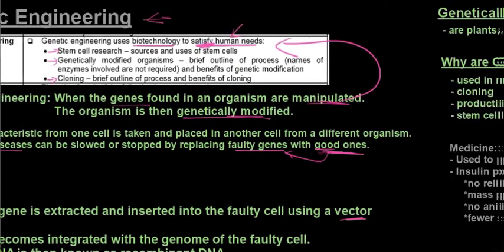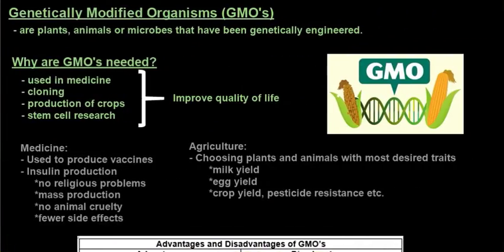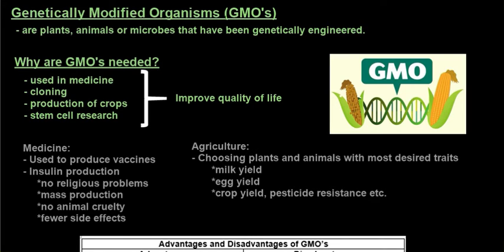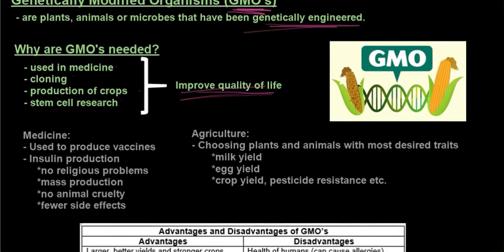We are now going to look at genetically modified organisms, also known as GMOs. These are plants, animals, or microbes that have been genetically engineered. Why do we need GMOs? They can be used in medicine, cloning, production of crops, and stem cell research. Basically, they are there to improve the quality of life.